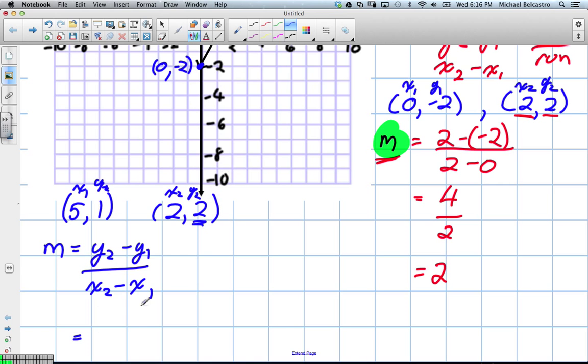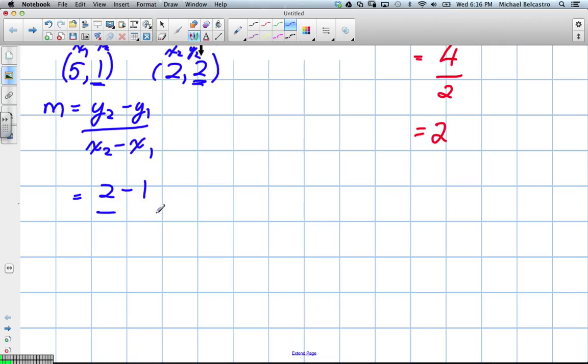So our y2 is a value of 2, subtract our y1 which is 1, divided by x2 which is a value of 2, minus x1 which is 5. So 2 subtract 1 is 1. 2 subtract 5 is actually negative 3. So the slope of this, we're going to leave it like a fraction, is negative 1 over 3.